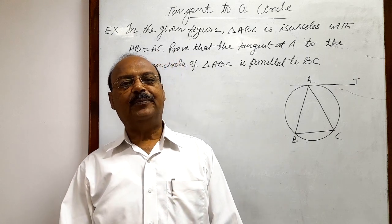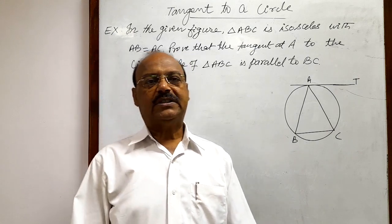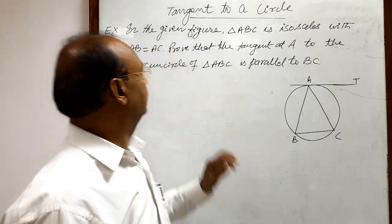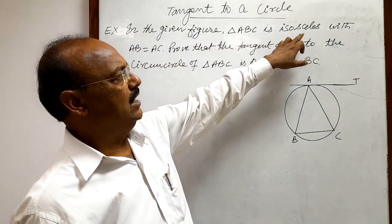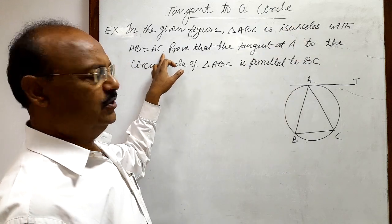Here let us discuss a question from the topic tangents to a circle. So first of all let us see the problem. Here the problem is: in the given figure, triangle ABC is isosceles with AB equal to AC.